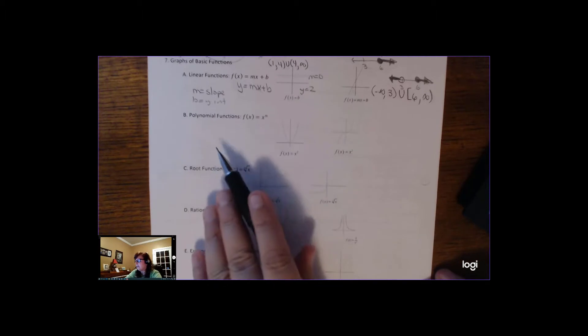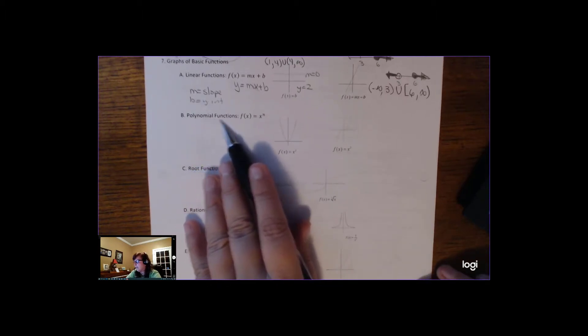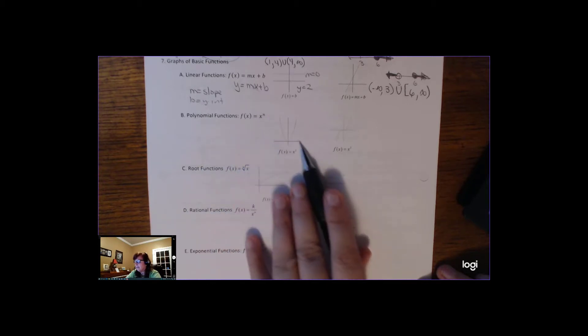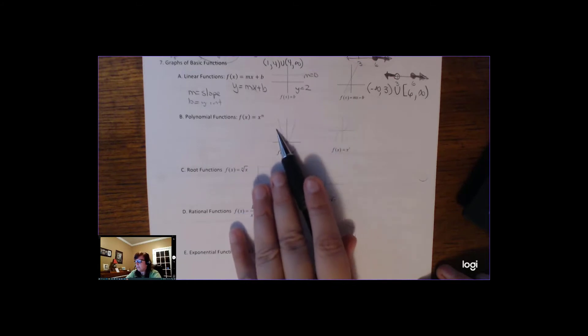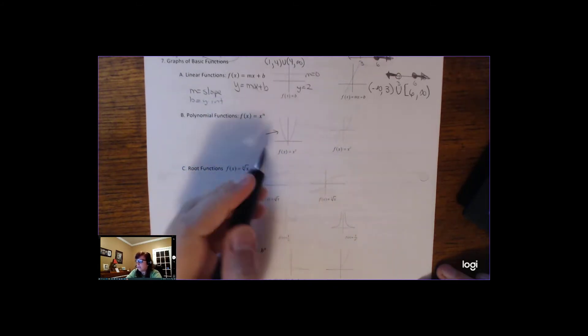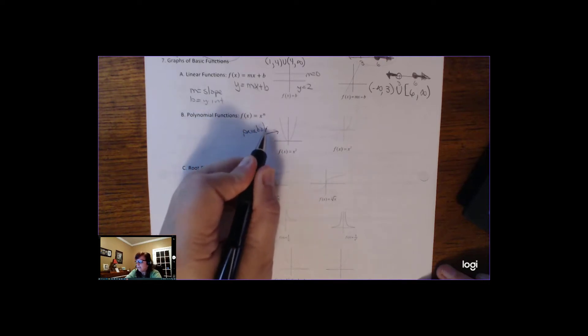A polynomial function, polynomial means many terms. And we've just got this one term here, x to the n. This looks like a quadratic here. So this is a special one, x squared. It's in the shape of a parabola. And because it has a 2 there, we call that a quadratic.